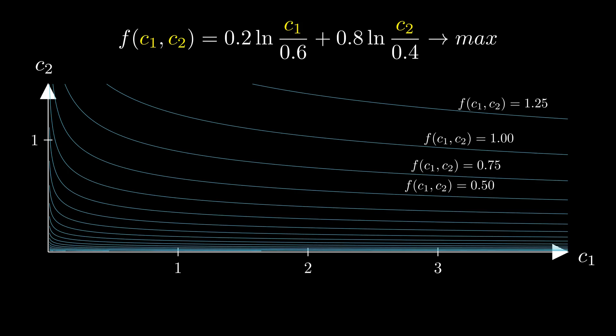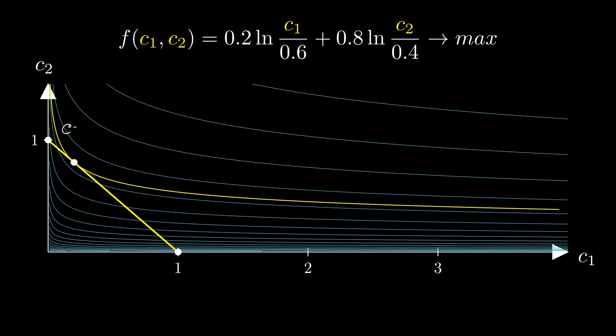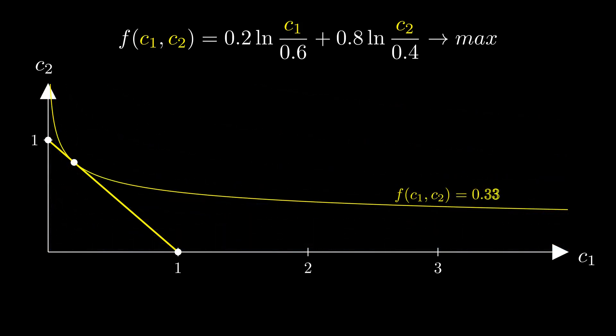Now, let's draw our constraint, which can be presented by a much simpler line. Intuitively, what we are looking for is the point that lies on this line while also belonging to an f function with a maximal possible value. It happens to be the line where the f function is equal to approximately 0.33.